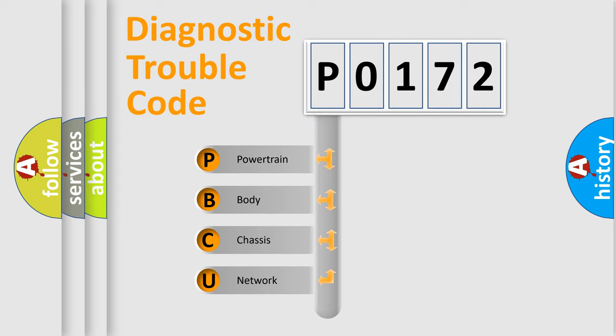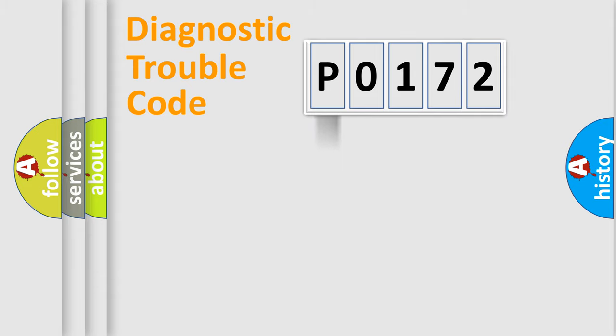We divide the electric system of automobile into four basic units: Powertrain, body, chassis, network. This distribution is defined in the first character code.